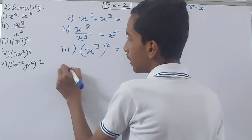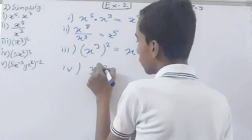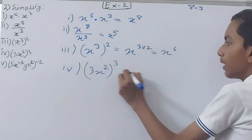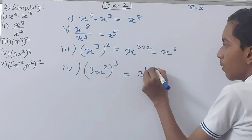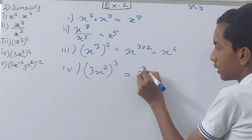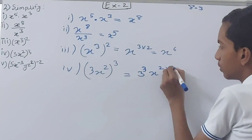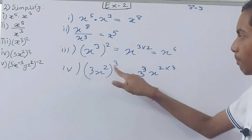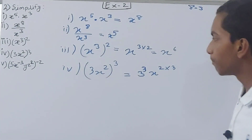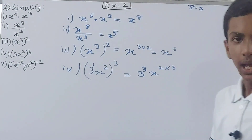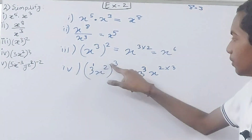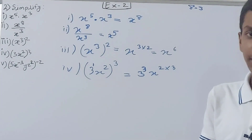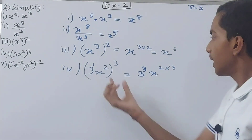Now the fourth one: 3x squared, whole to the power 3. Same thing — we'll have 3 to the power 3 and then x to the power 2 into 3. Why? Because 3 has an implied power of 1 inside the bracket, and 1 into 3 is 3. Then for x: 2 into 3.